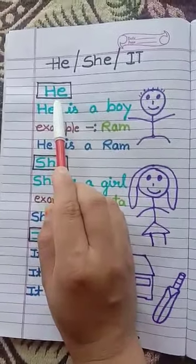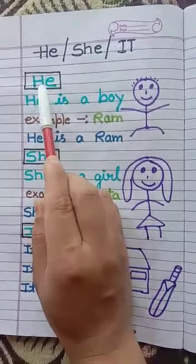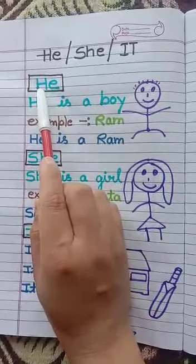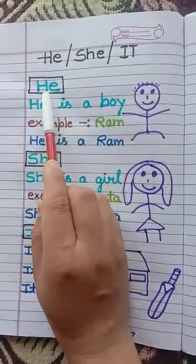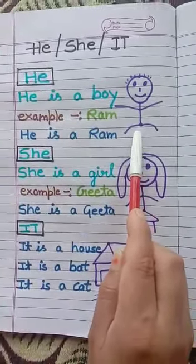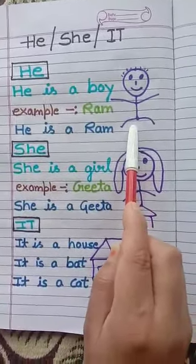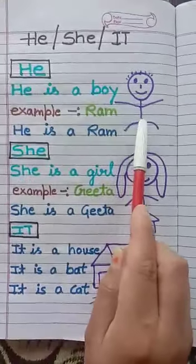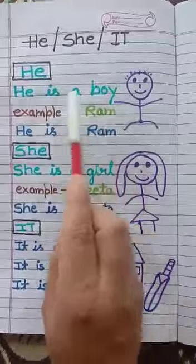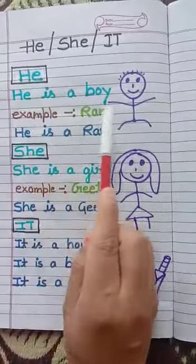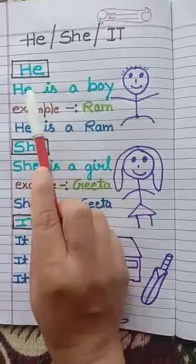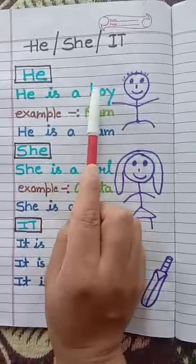He. What is the spelling of he? H, E — he. Now look at the picture. The picture is of a boy. He is used for a boy. He is a boy.